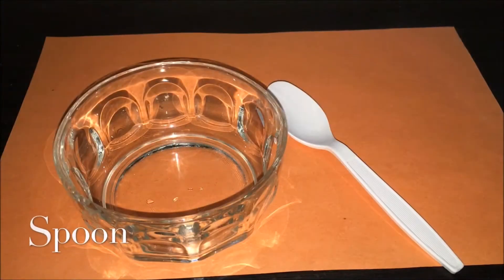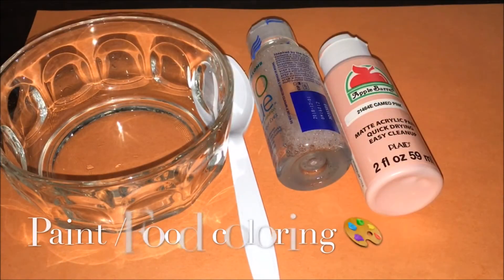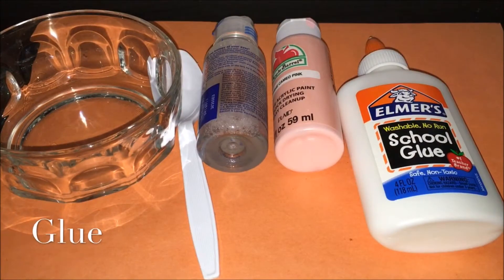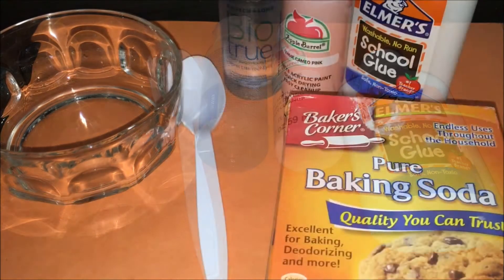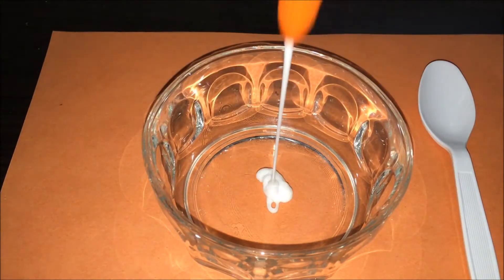For the first slime you will need a bowl, a spoon to mix with, eye contact solution or borax, paint or food coloring, clear glue or white glue, and baking soda or cornstarch.